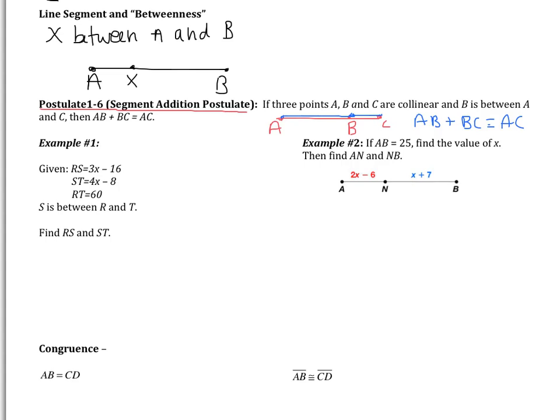Example number one, it gives you RS, ST, and RT. It tells you S is between R and T. So we're going to jump right in by drawing a figure. S is between R and T, so that means R and T are my endpoints. S is somewhere in between those two. I don't know exactly where, so I'm just going to pick somewhere. Now I know that RS is 3X minus 16, I know that ST is 4X minus 8, and I know that RT, the entire segment, is 60. The question says, find RS and ST.